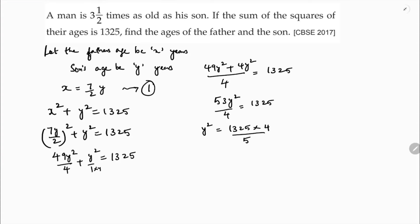Divided by 53. 53 times 25 equals 1325, so Y squared equals 25 into 4, which is nothing but 100. Y equals root of 100, so Y equals 10. Because it is age, we take only positive 10. So the value of Y is 10.